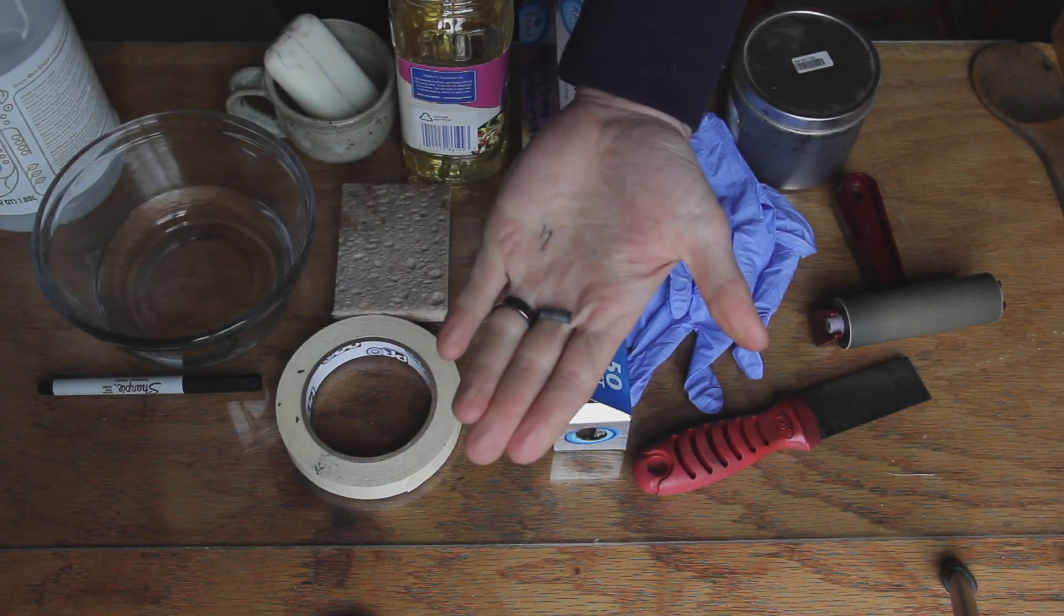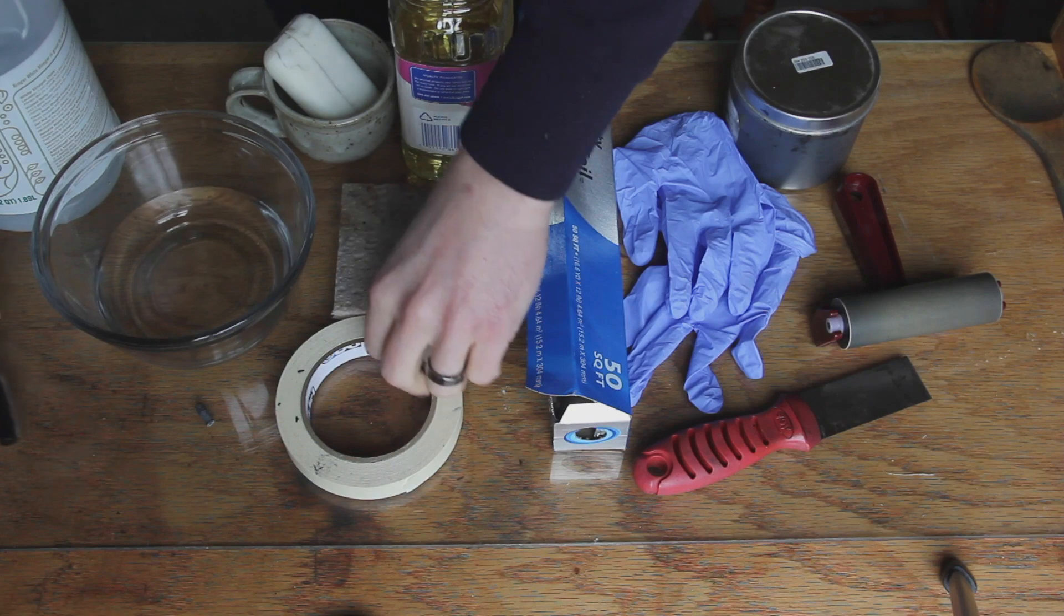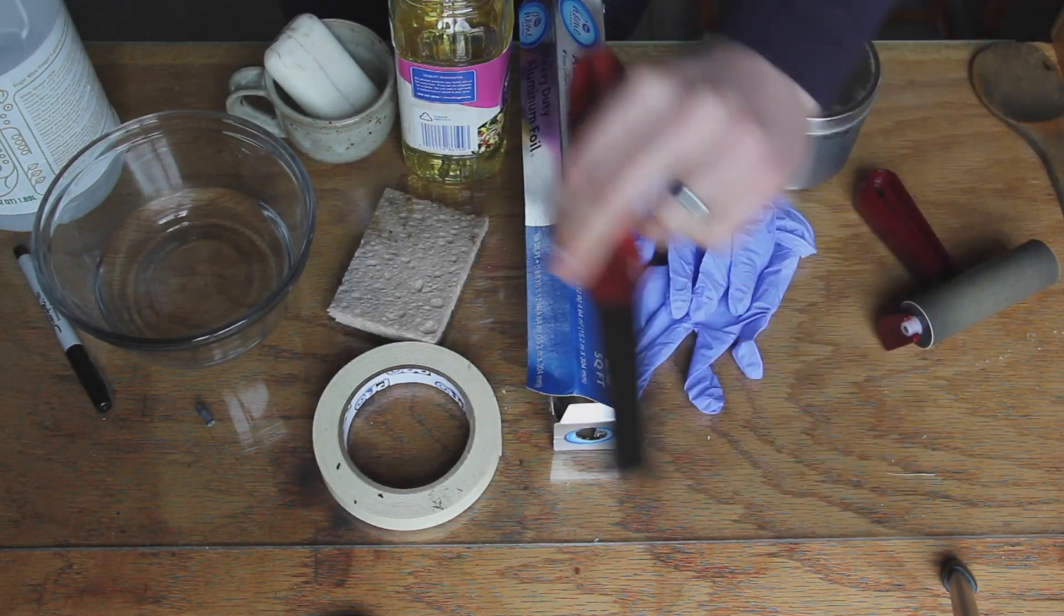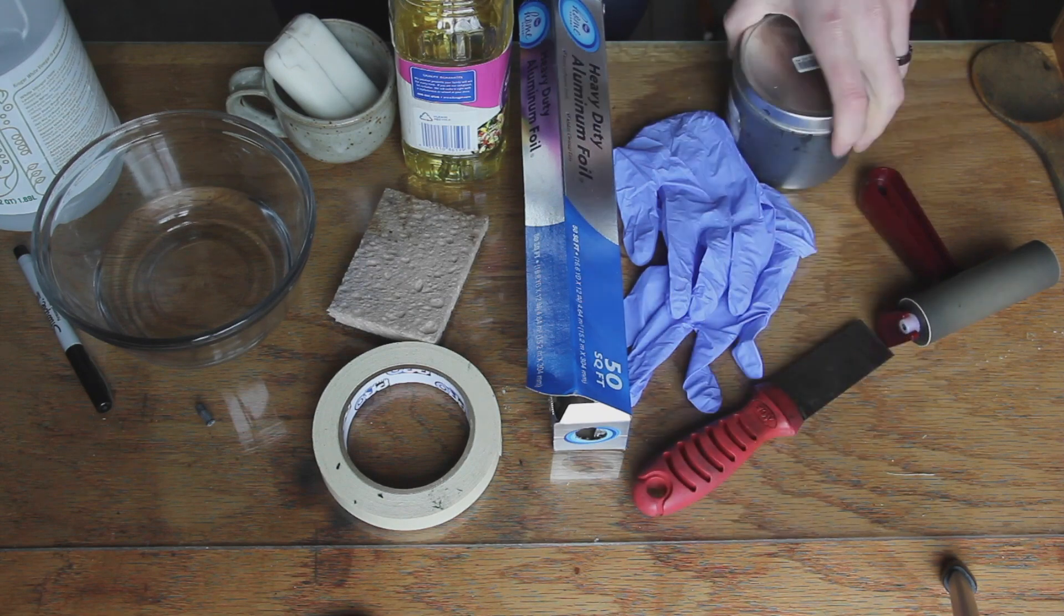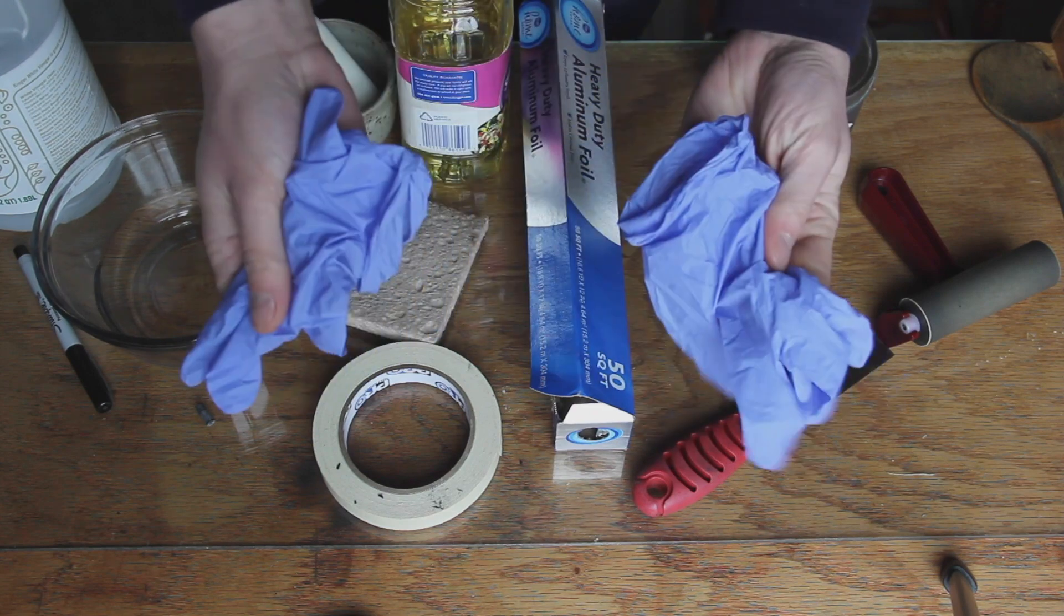I have a litho crayon and a sharpie to attempt different drawing procedures. I have some tape and a sponge, just a regular sponge. A brayer, palette knife, and an oil-based ink. Lithographic ink is preferable but I'm using relief ink here and you also need some gloves.